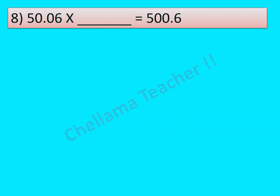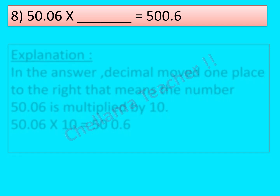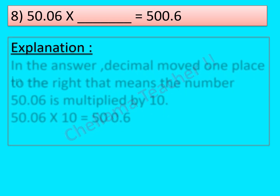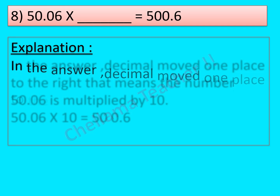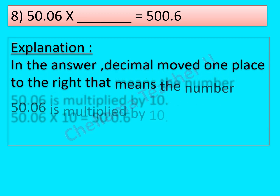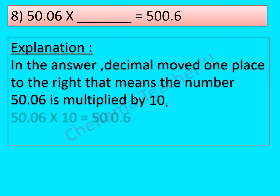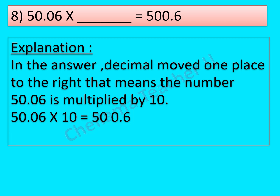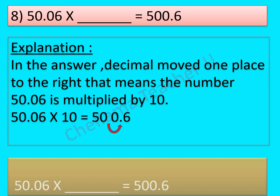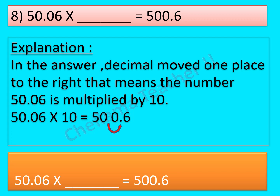Question No. 8: 50.06 × dash is equal to 500.6. In the answer, the decimal moved one place to the right, which means 50.06 is multiplied by 10. That is, 50.06 × 10 = 500.6 — the decimal is moved one place towards the right. So the final answer is 10.